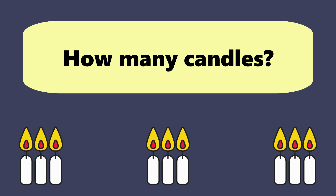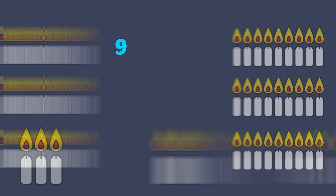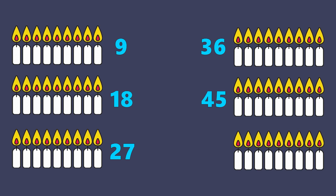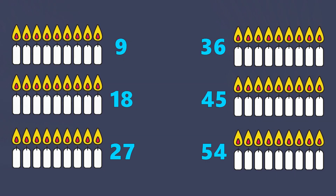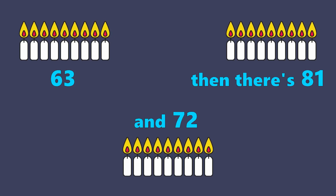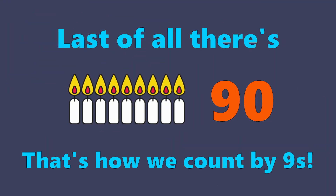How many candles? Count by nine. Nine and eighteen, twenty-seven, thirty-six, forty-five and fifty-four, sixty-three and seventy-two, then that's eighty-one, and last of all, there's ninety. That's how we count by nines.